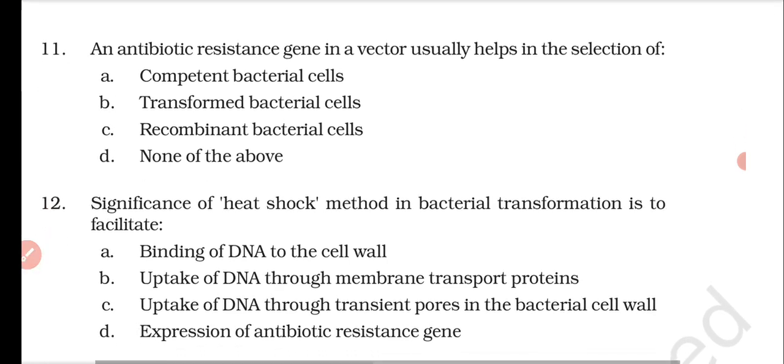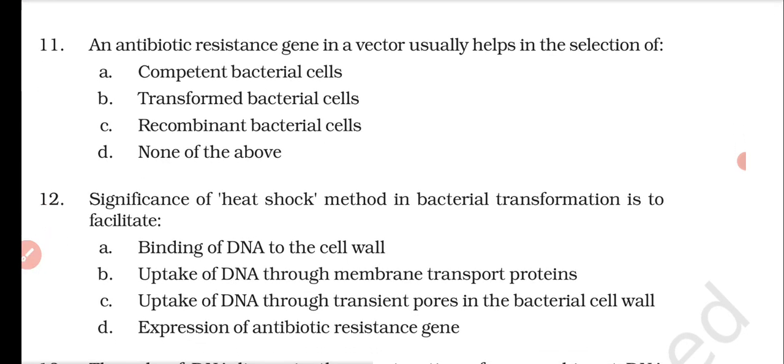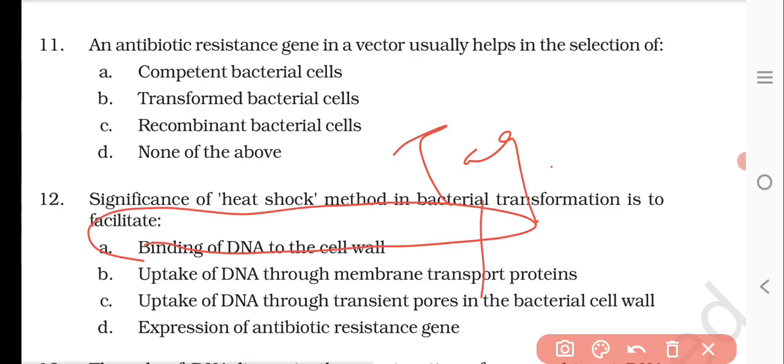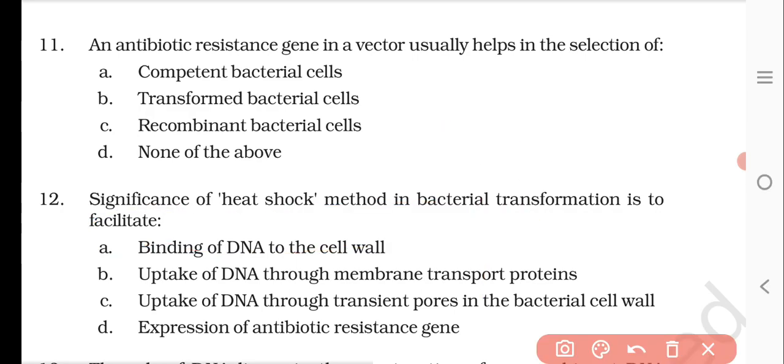Question number eleven: an antibiotic resistance gene in the vector usually helps in the selection of — competent bacterial cells, transformed bacterial cells, recombinant bacterial cells, or none of the above. The right answer is transformed bacterial cells.